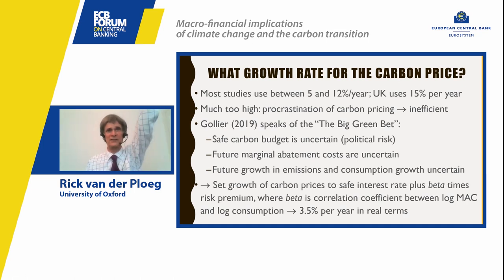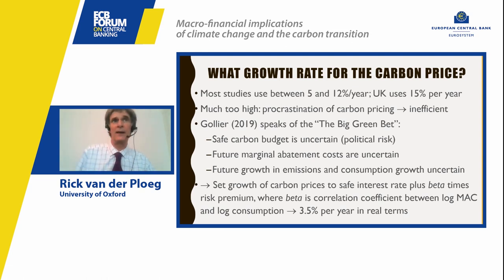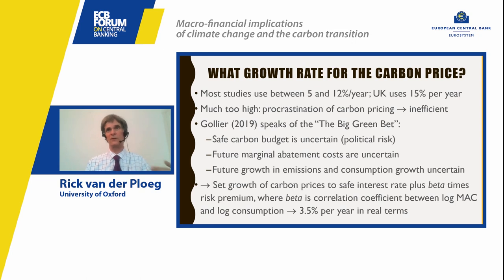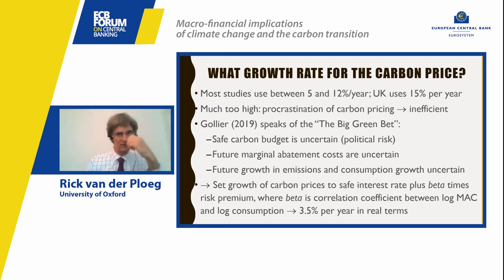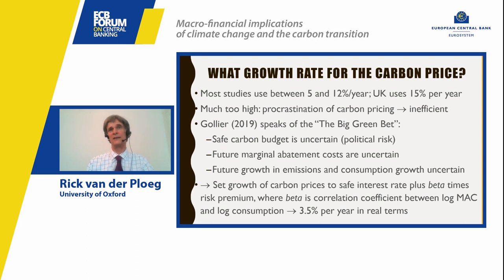Christian Gollier's asset pricing approach finds that the growth of the carbon price should equal the safe interest rate plus beta times the risk premium, coming out to about 3.5% per year in real terms. Good policy advice is to start with a high carbon price and then let it grow in real terms at 3.5% per year — announce that and stick to it, so that businesses know the world is transitioning from a carbon-intensive to a carbon-free economy.